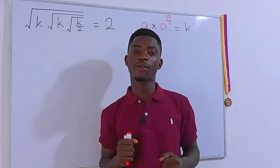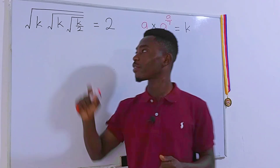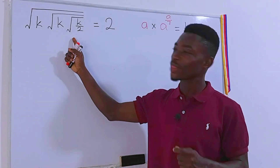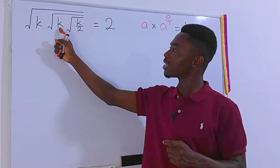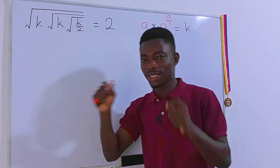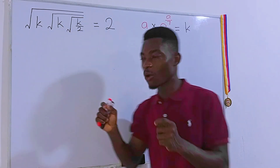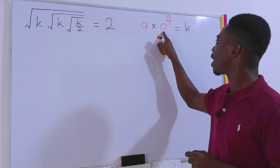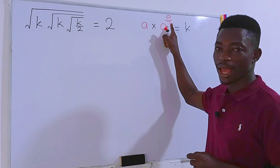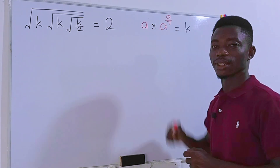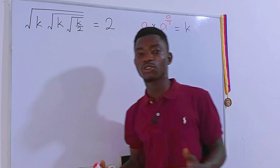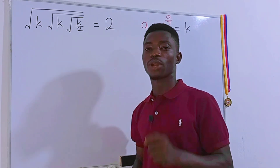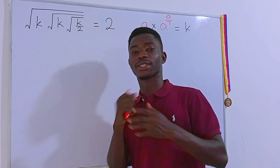Hello guys and welcome to another video. We have this weird equation right here and we have to find the value of k, and k should be of the form a times a to the power a divided by 7. Pretty interesting question — feel free to pause the video and give it a try first.